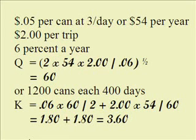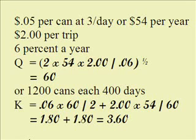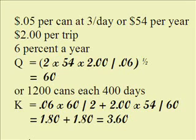Here's another example. Suppose you have returnable cans worth a nickel each, and your family drinks three a day — that's $54 a year. The trip to the recycling center costs $2 a trip, and again let's say six percent per year. We work that out and find the optimum is about $60, or 1,200 cans, which works out to every 400 days. Our check answer confirms we did it correctly.